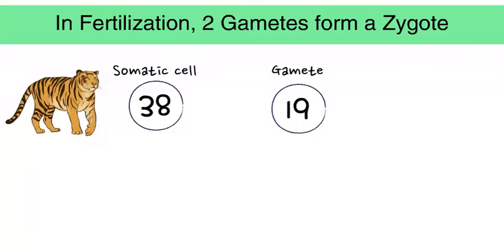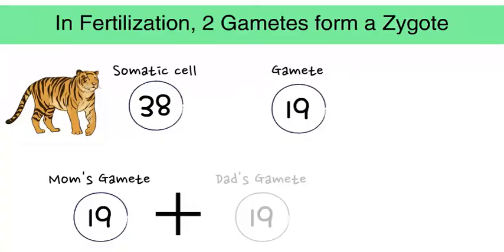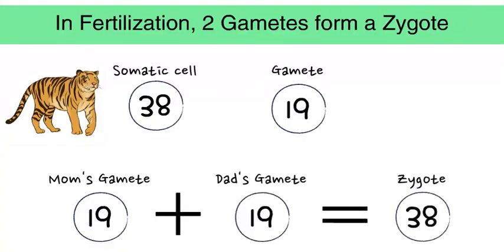In fertilization, two gametes come together to form a zygote. A gamete from the mother and a gamete from the father create a zygote with 38 chromosomes.